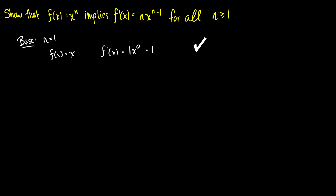The next part — you might not know where to go with this. For the induction hypothesis, we say that n = k is true. So we're going to assume that if f(x) = x^k, then f'(x) = k times x^(k-1). Now we need to show that n = k+1 is true.